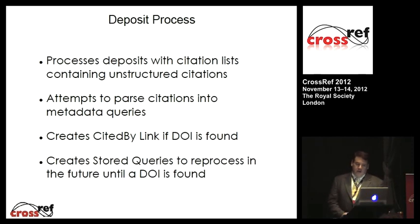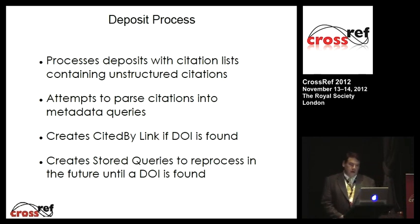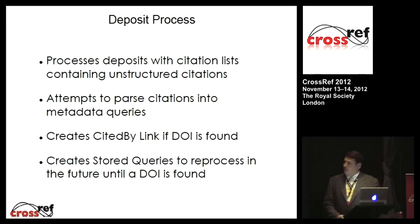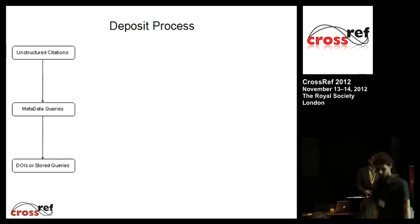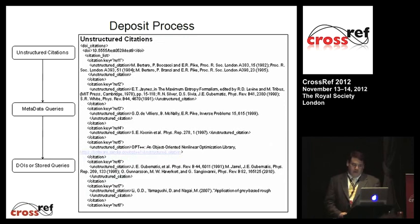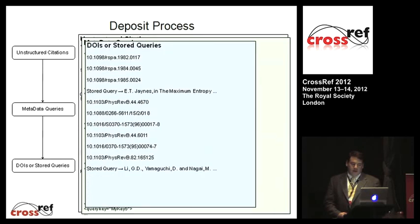In the deposit process, it takes your citation lists from your deposit and looks for unstructured citations. As discussed earlier, you could have DOIs, metadata, or unstructured citations deposited. This handles the unstructured citations component. It uses several parsers to parse into metadata, performs a query against our system to generate cited-by links to DOIs, and if it doesn't find a match, creates stored queries to reprocess at a later time.